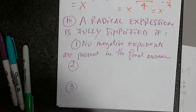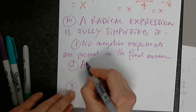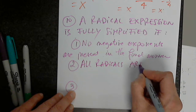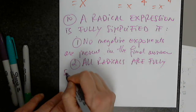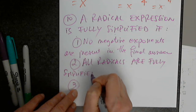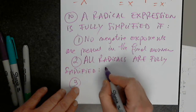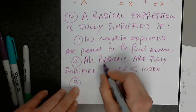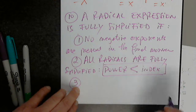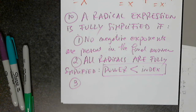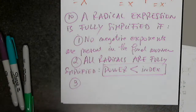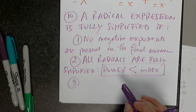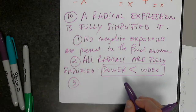Number two: all radicals are fully simplified. That means the power is less than the index — always. All radicals in the final expression must be fully simplified, meaning the power inside, m, has to be smaller than n, which is the index.